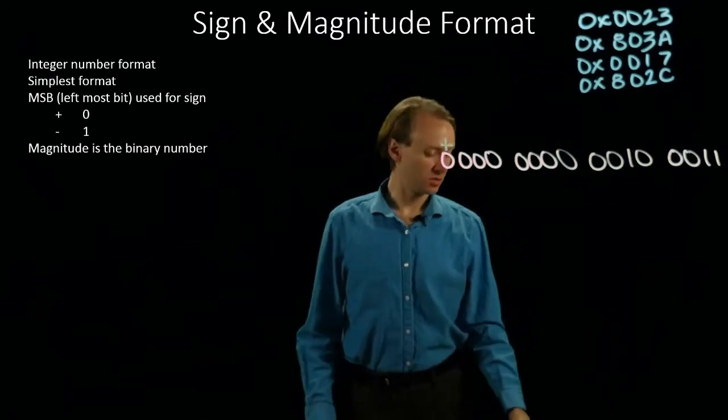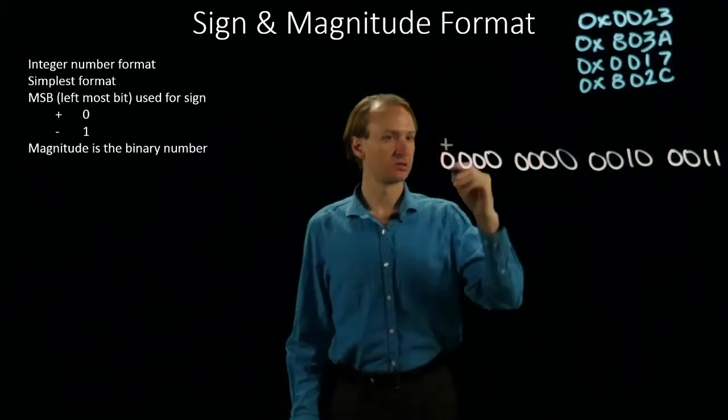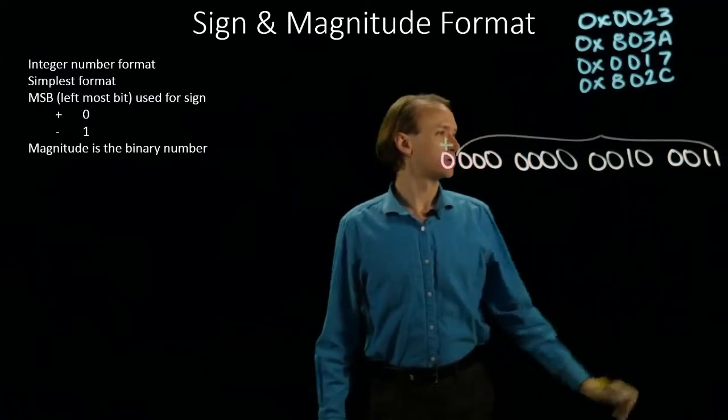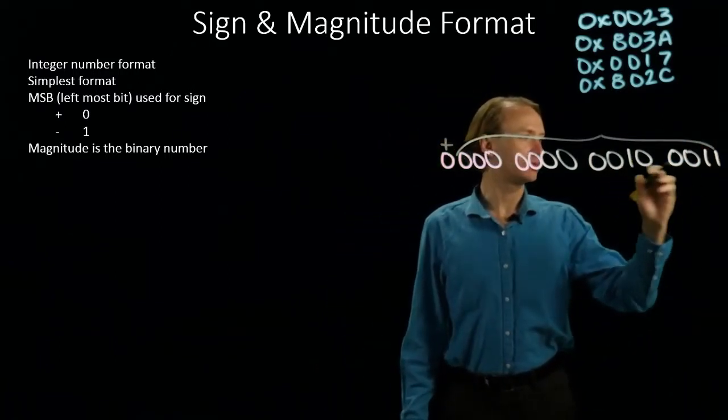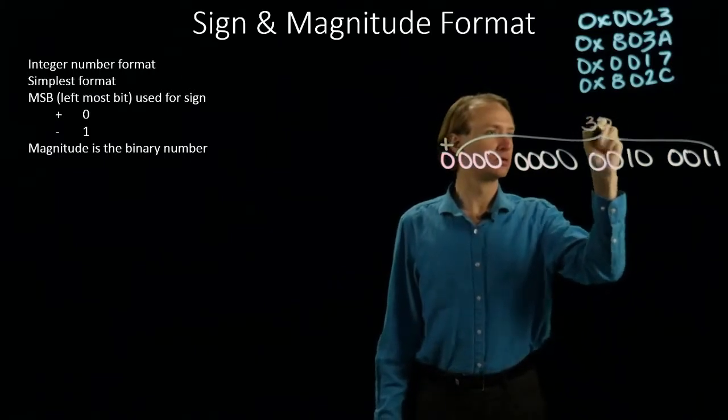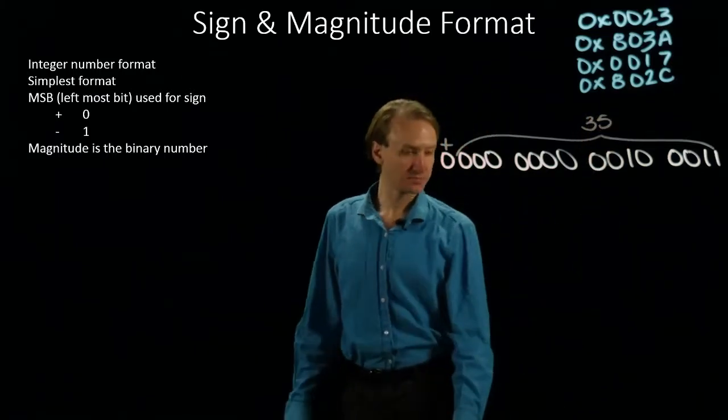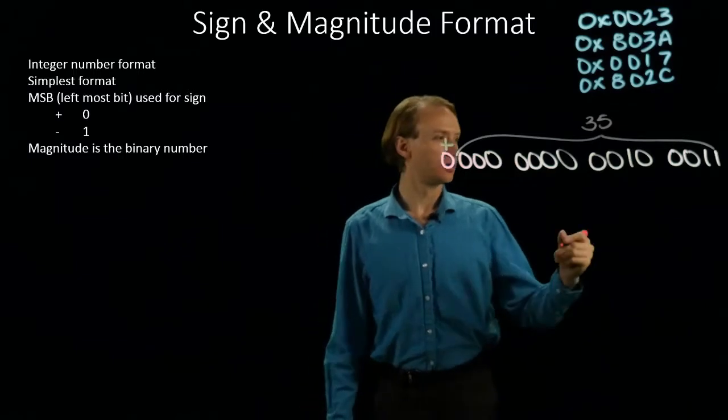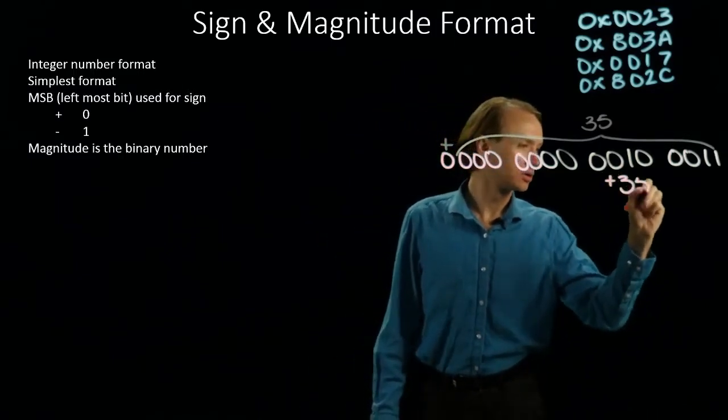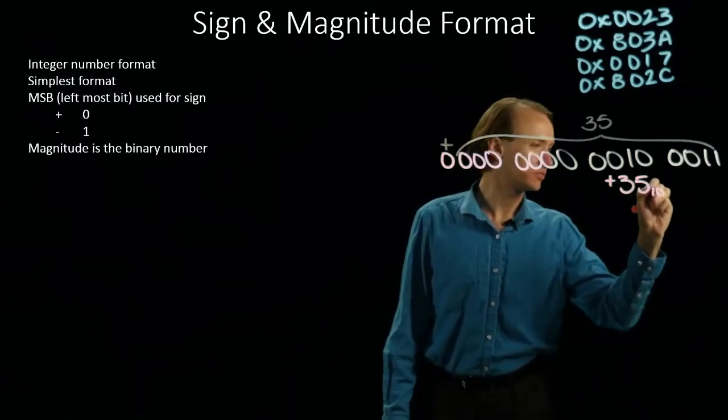The remaining bits are telling us about the magnitude of the number. So in this case, I have 32 plus 2 plus 1 is 35. So this is positive 35 in base 10.